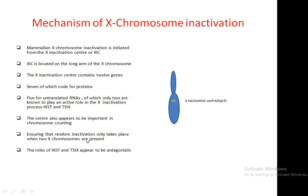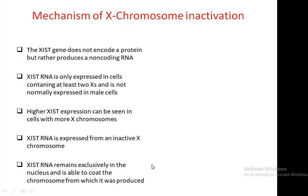If one gene inactivates the chromosome, the other helps to continue the process — their actions are antagonistic or opposite to each other. The XIST gene does not encode a protein but rather produces a non-coding RNA, meaning it does not produce any active protein. XIST RNA is only expressed in cells containing at least 2 X chromosomes and is not normally expressed in male cells. Higher gene expression of XIST can be seen in cells with more X chromosomes, meaning in females.